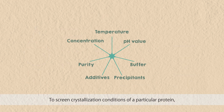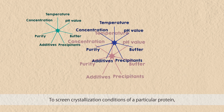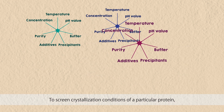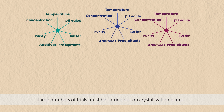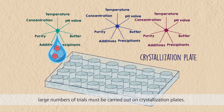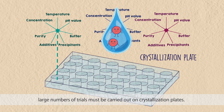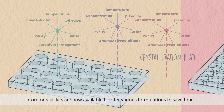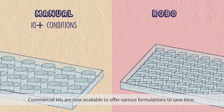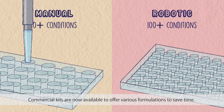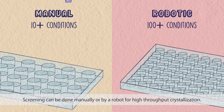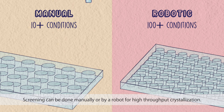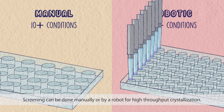To screen crystallization conditions of a particular protein, large numbers of trials must be carried out on crystallization plates. Commercial kits are now available to offer various formulations to save time. Screening can be done manually or by a robot for high-throughput crystallization.